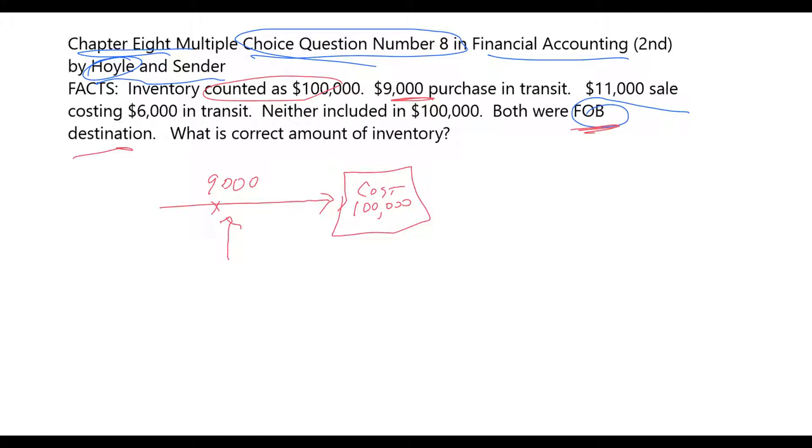The FOB point is FOB destination. So the inventory will become our inventory when it gets to us, when it gets right here. And obviously you can see the inventory is not there yet.